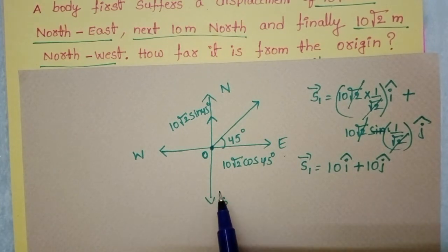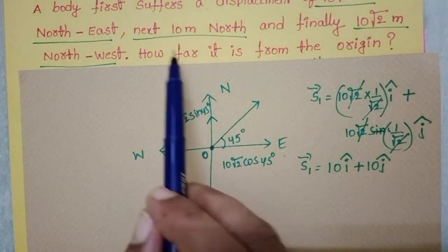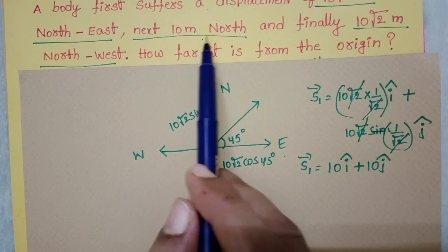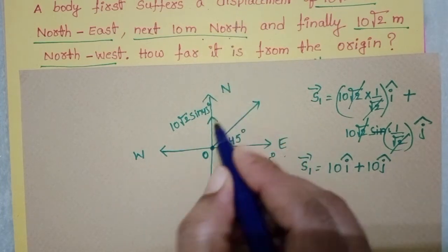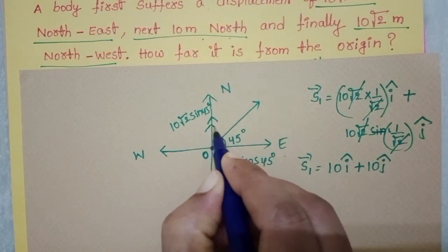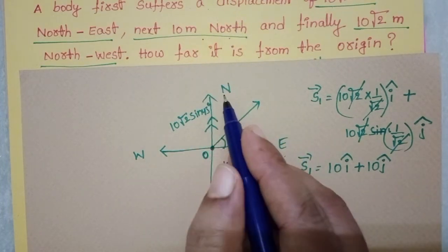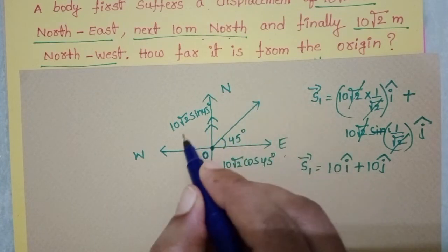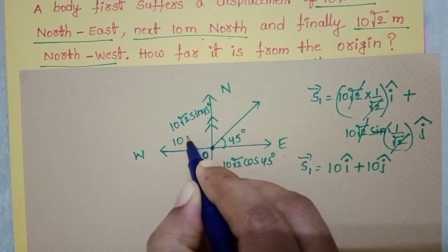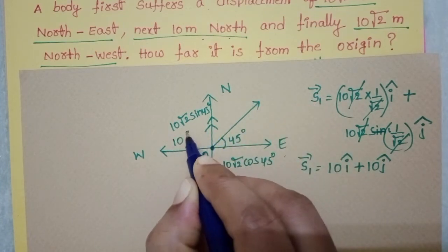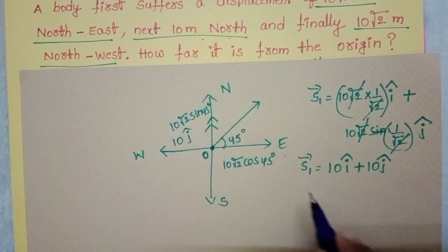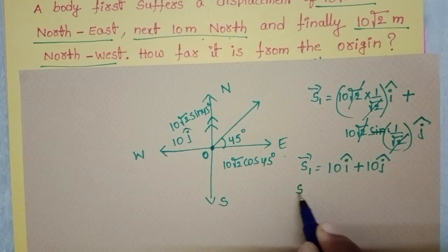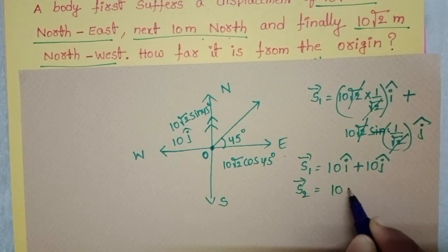After that, the particle moves 10 meters along the north direction, which is the upward direction with unit vector j cap. So S2 = 10j cap.